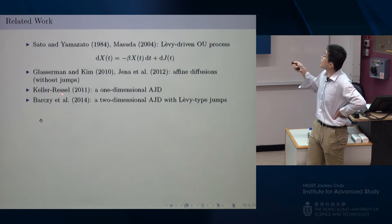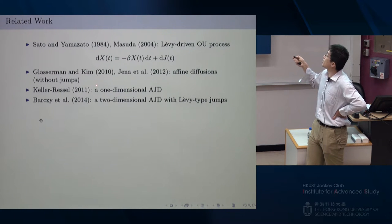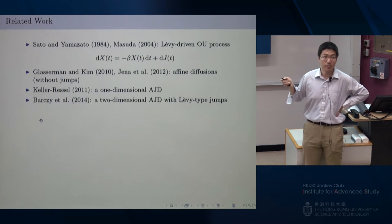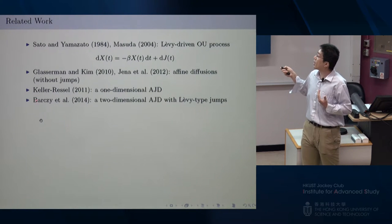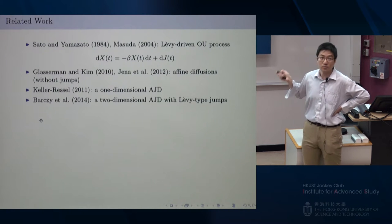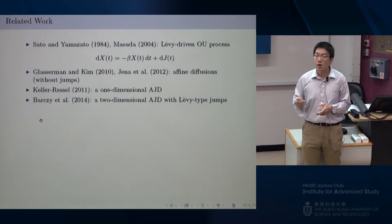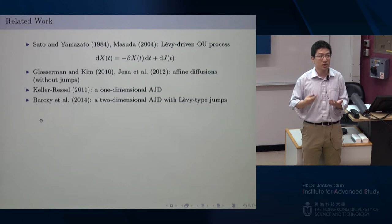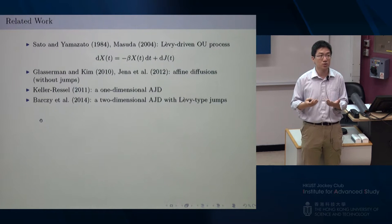Another paper also analyzes the ODE asymptotics and studies affine diffusions with jumps, but only in the one-dimensional case. The approach in this talk is similar to a very recent paper, which studies a special two-dimensional case with particular structure. In this talk, I discuss the most general case — even though I don't present it in the most general form, the results hold for any affine jump diffusion.